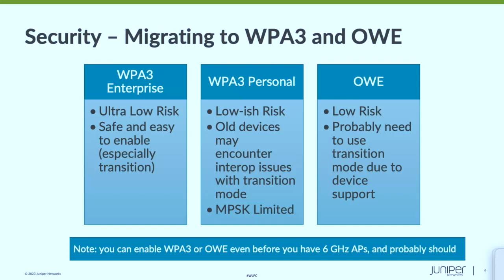Now we finally have broad device support — with iOS 16 and the latest macOS there is OWE support. Realistically you're probably going to need to turn on transition mode because of the lack of device support. The point of this slide is: if you haven't turned on WPA3, do it now. Do it in a safe area of your network, get comfortable with it, and then when you're ready, adopt 6 GHz. Don't do the two changes at the same time — separate them.